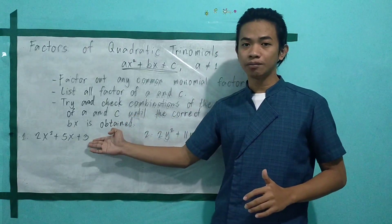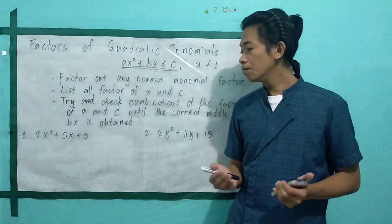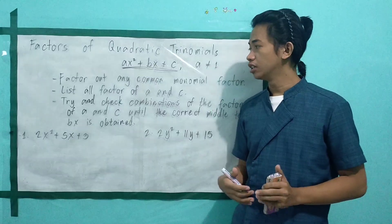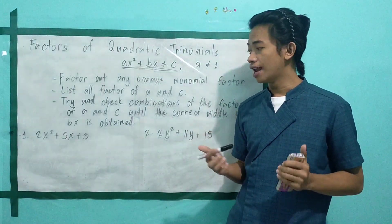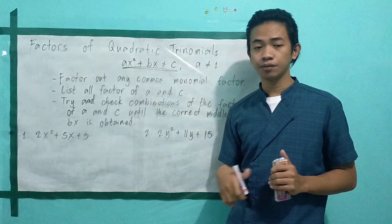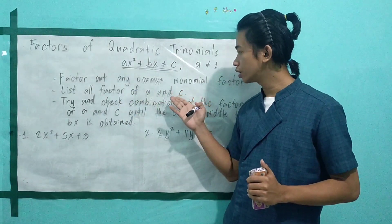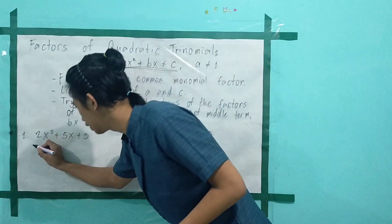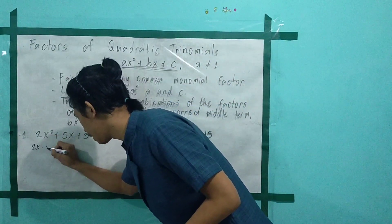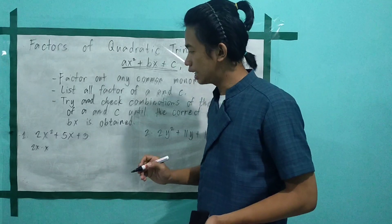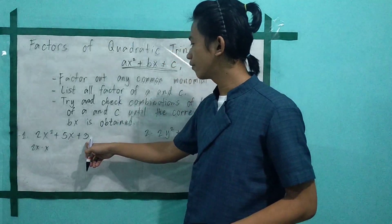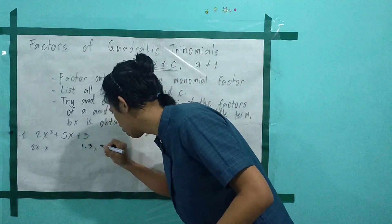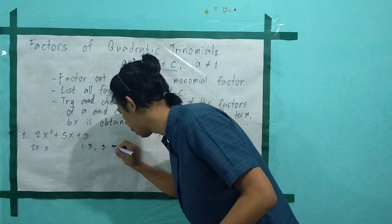Let's proceed to problem number 1. We have 2x squared plus 5x plus 3. Does it have a GCF? None. So we proceed to step number 2: list all the factors of a and c. The factors of a are 2x multiplied by x. For c, the factors are 1 times 3, and the other is 3 times 1.